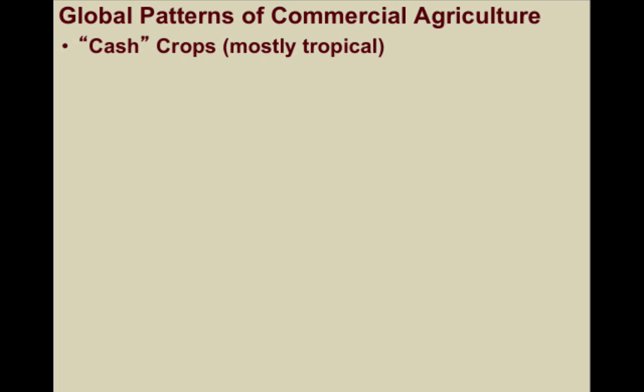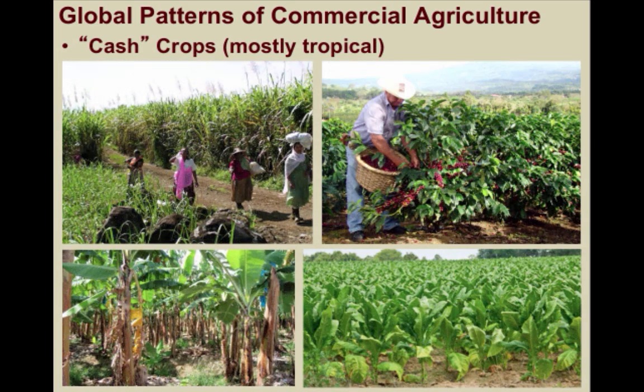Looking at global patterns of commercial agriculture, we will first examine non-subsistence, or commercial farming, in many poorer countries — a leftover from colonial times. A lot of these crops are produced on plantations, large estates organized to produce cash crops, which are grown specifically for profit. Cash crops are largely tropical and are not needed for sustenance, but for more specialized needs and wants.